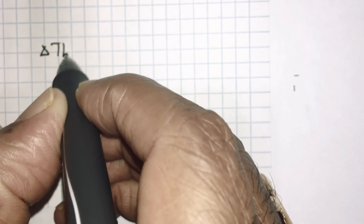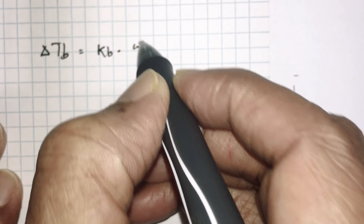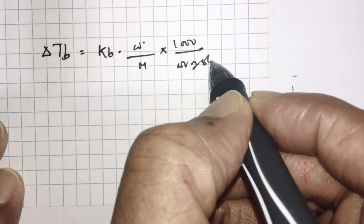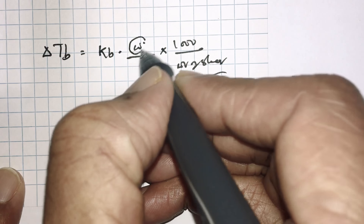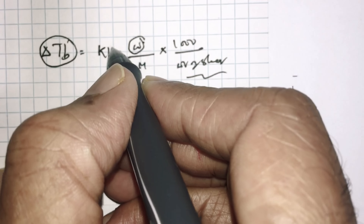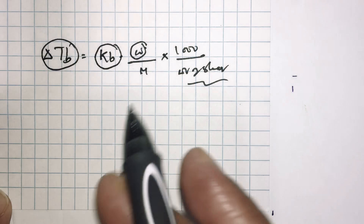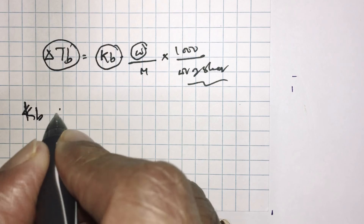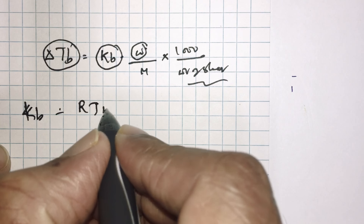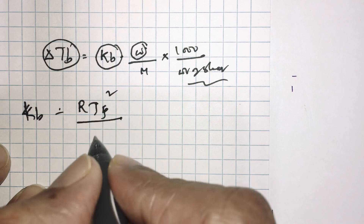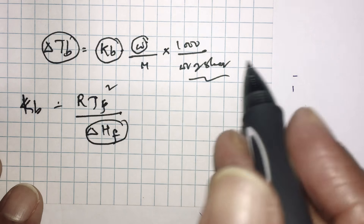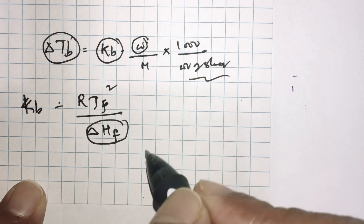Depression in freezing point can also be used to compute the molar mass of an unknown solute, using the same logic: delta Tf equals Kf times (weight of solute divided by molecular weight of solute) times (1000 divided by weight of solvent). You know the weight of solvent taken, the weight of solute dissolved, and delta Tf experimentally. For a given solvent, the Kf value is known. Thermodynamics relates Kf to R times Tf squared divided by delta Hf, where delta Hf is the latent heat of fusion. Therefore, depression in freezing point data can be used to compute the molar mass of a given solute.